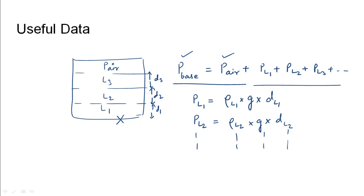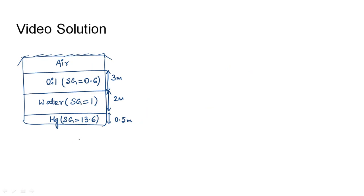gravity is 13.6 and the depth is 0.5 meters from the bottom. On top of the mercury layer is water of depth 2 meters, and then there is oil of specific gravity 0.6 for depth 3 meters. On the very top is air which has a certain pressure of its own since it has been locked under pressure.